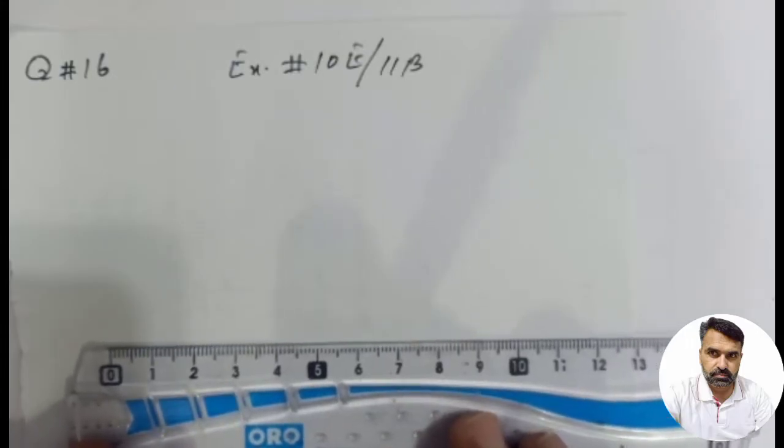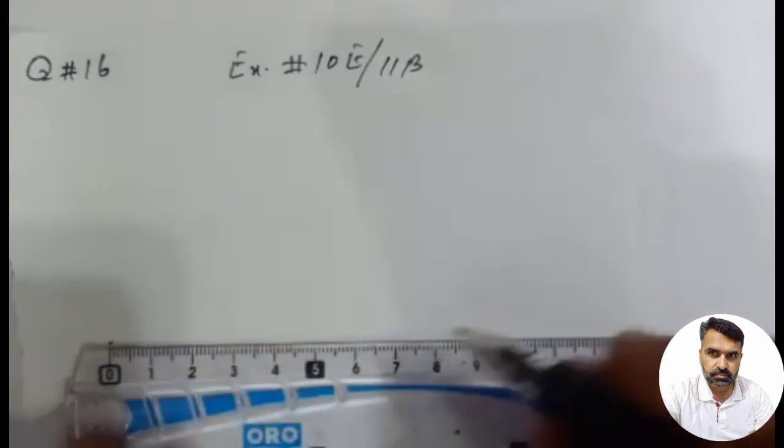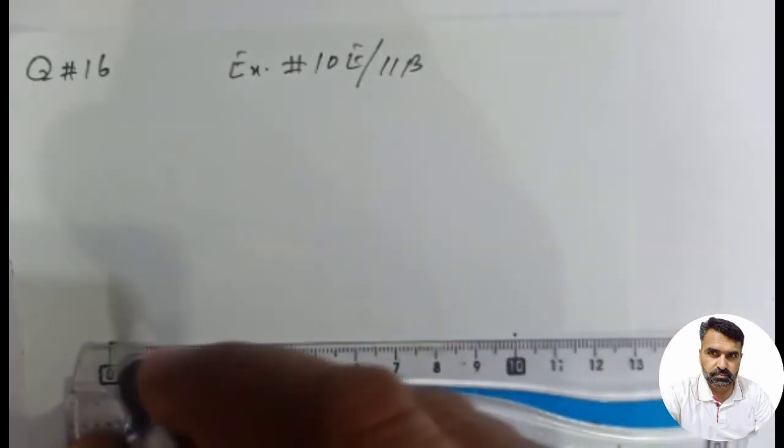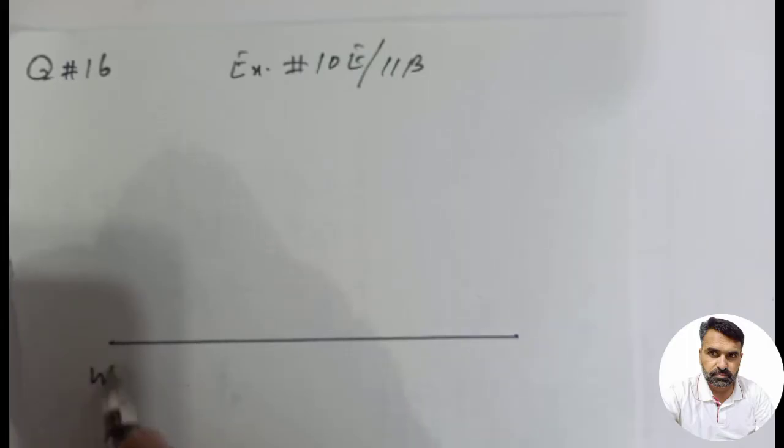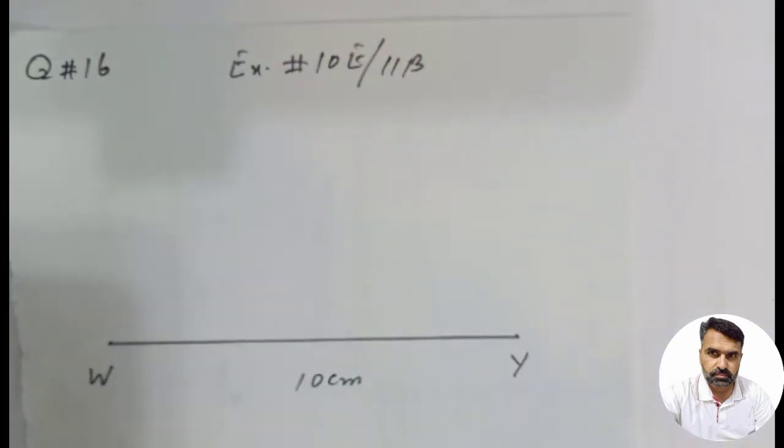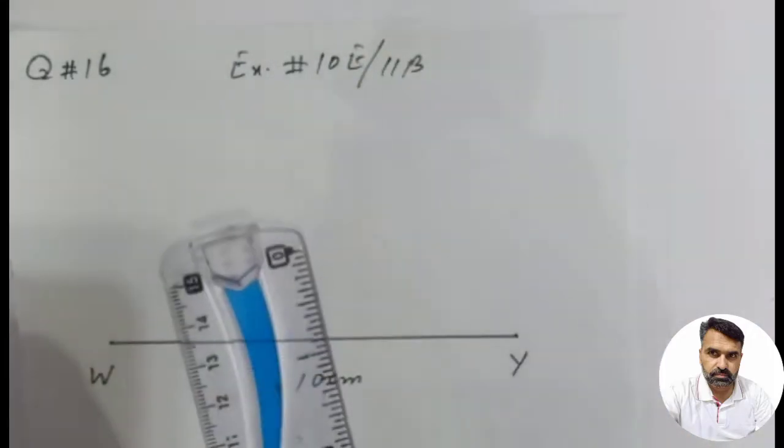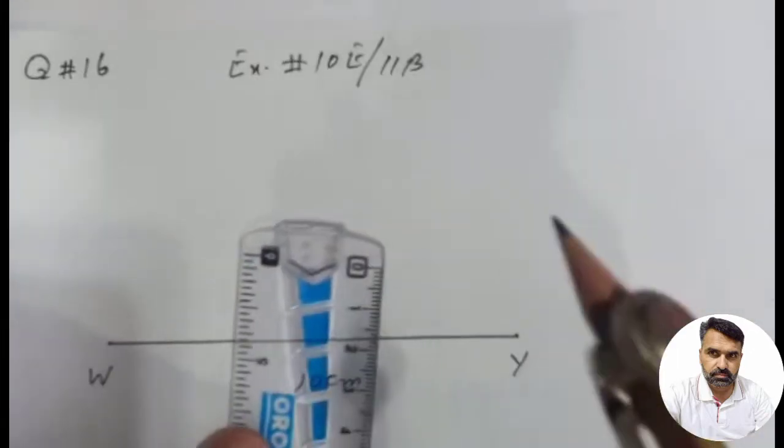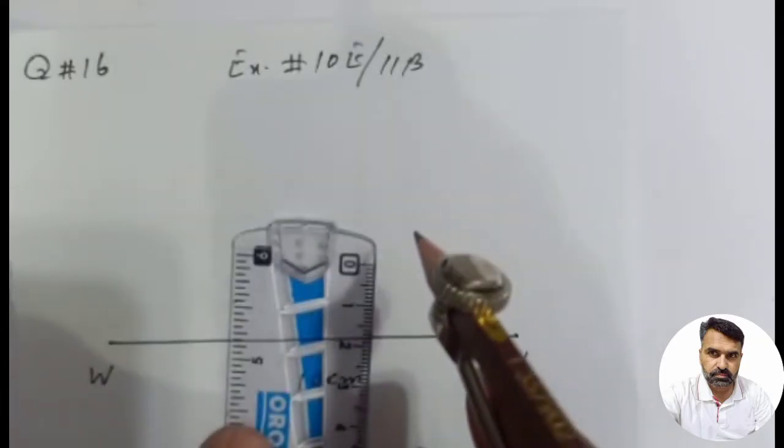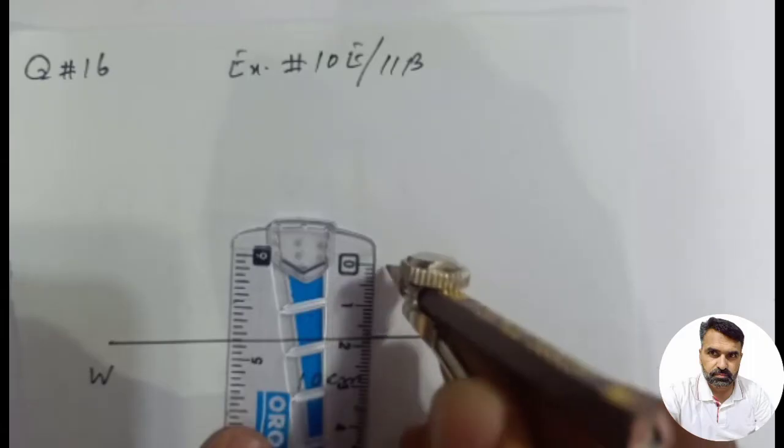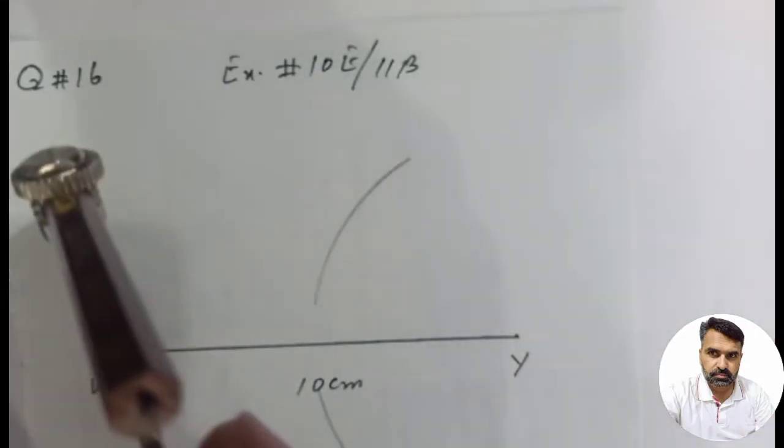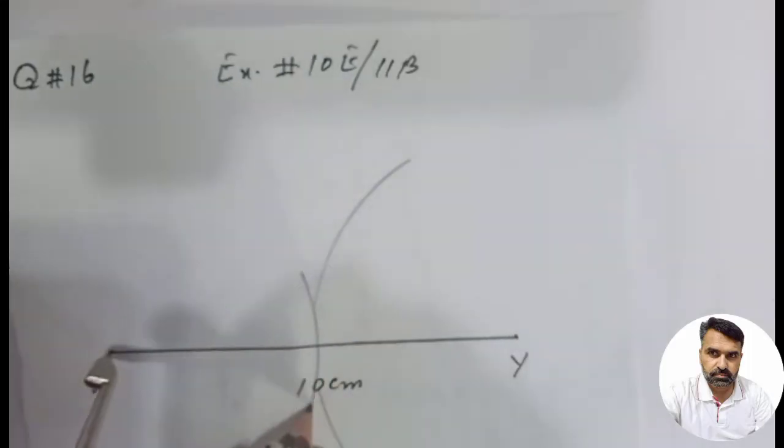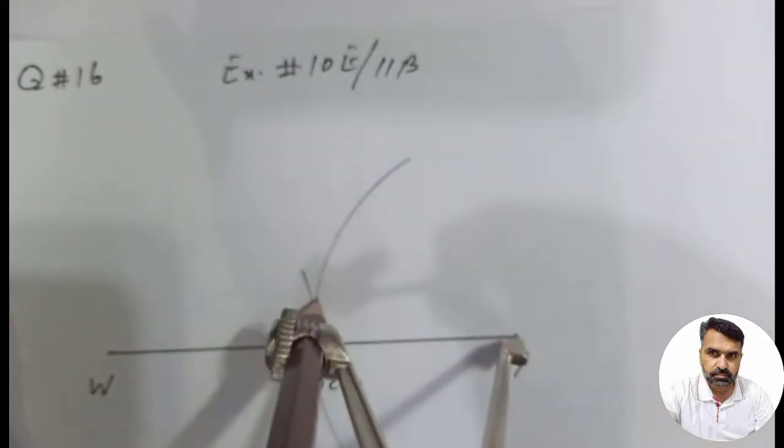Students, I will draw a line which is 10 cm. I will draw a line from 0 to 10 on the ruler. Then I will draw the line and mark the points.